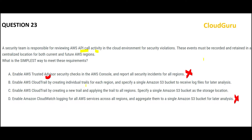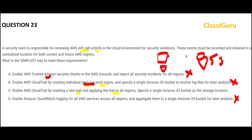Now we have options B and C to choose from. Option B says they will set up an individual trail for each region and send it to S3 buckets — so individual trails for each region all feeding into one S3 bucket. Option C says they will create a new trail and apply that trail to all regions. This API call activity can be across different regions, including current and future regions.